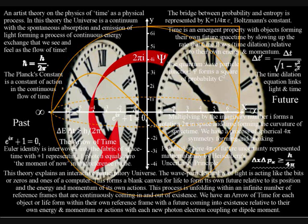Time is an emergent property in this theory, with objects forming their own future space-time by slowing up the rate that time flows, relative to the energy and momentum of their own actions.